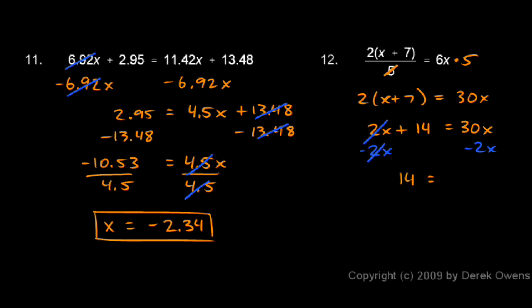And on the right, 30x minus 2x is 28x. You can finish up by dividing each side by 28, and so x equals 14 over 28, which is 1/2, and that's your answer.